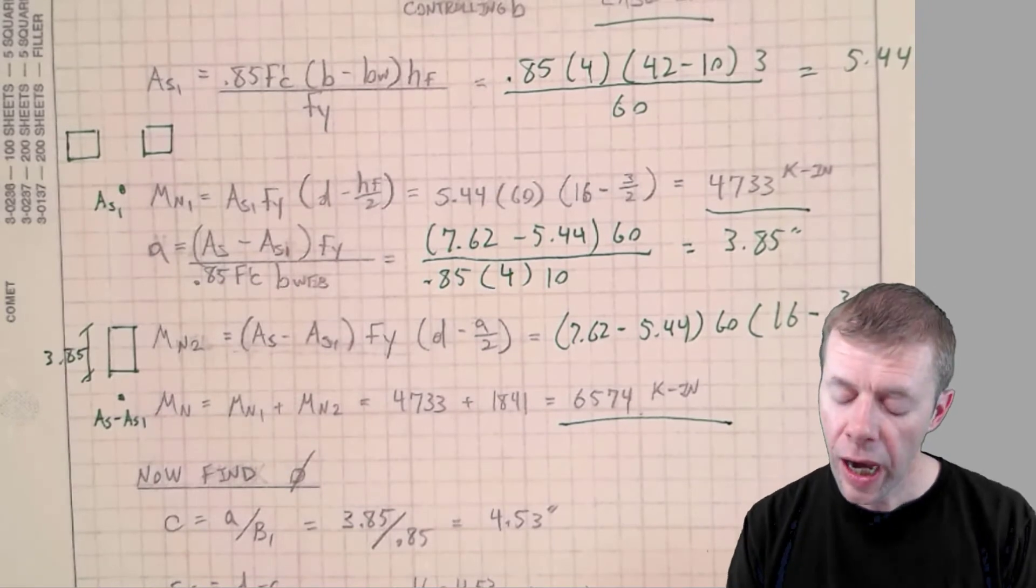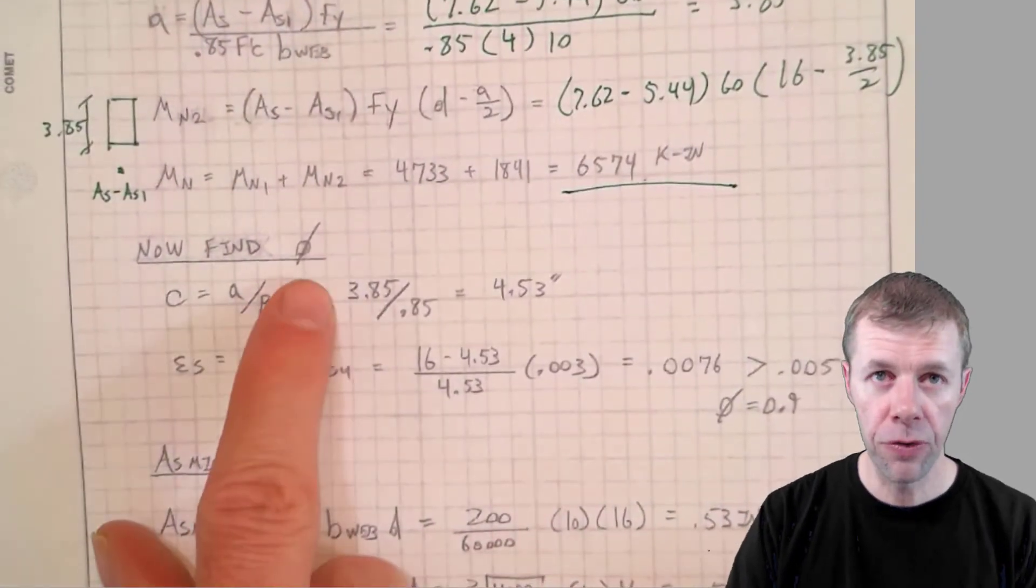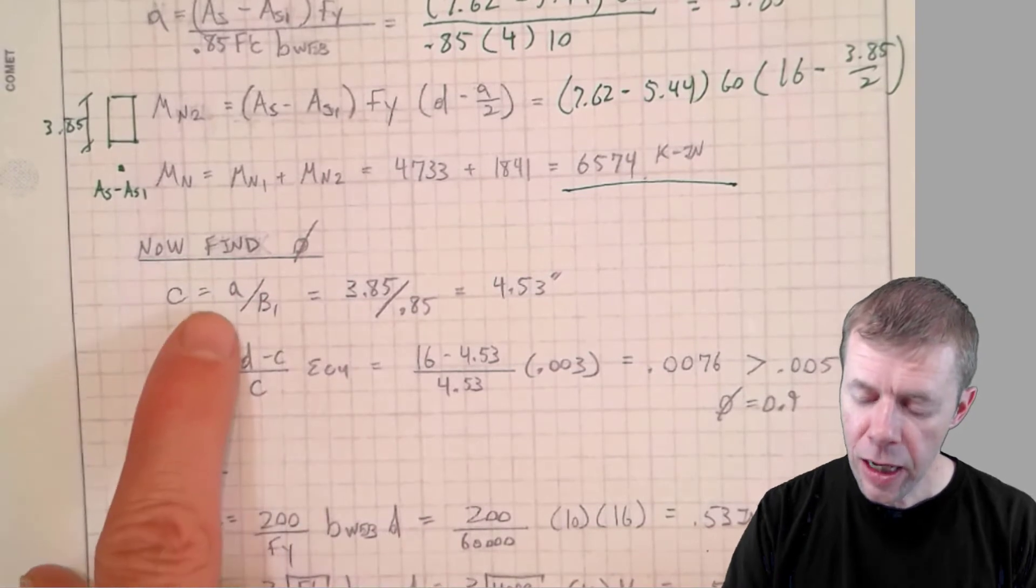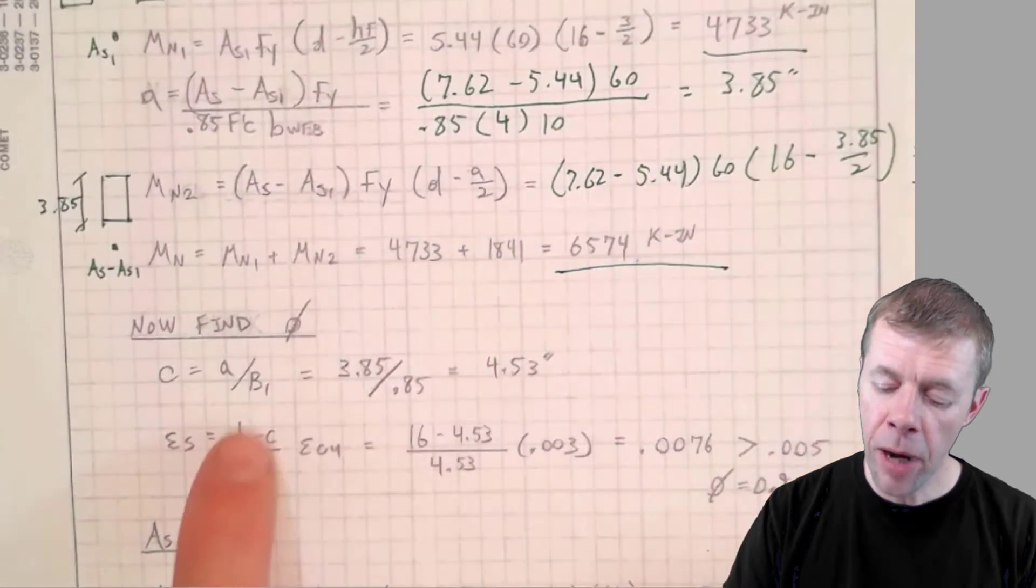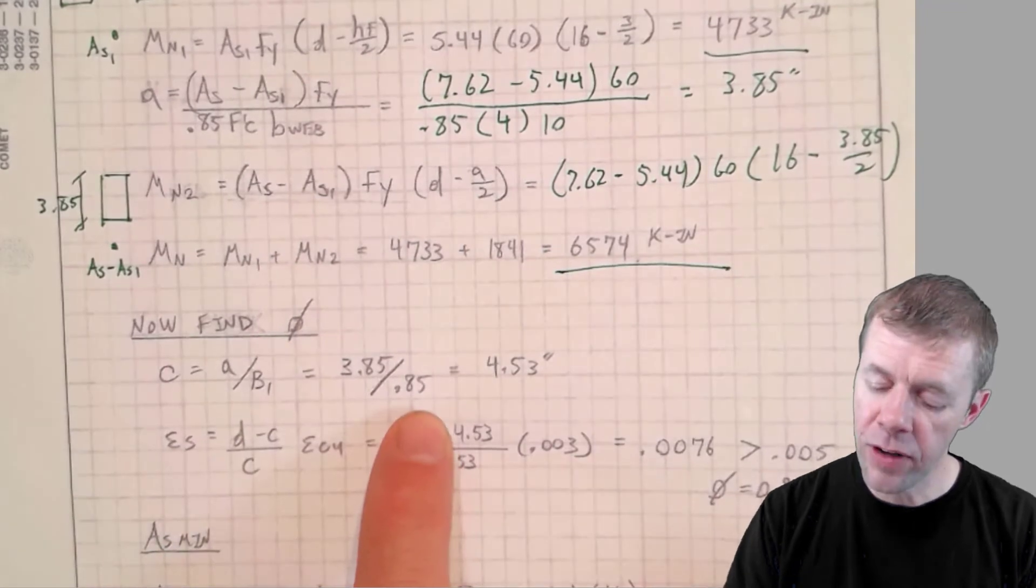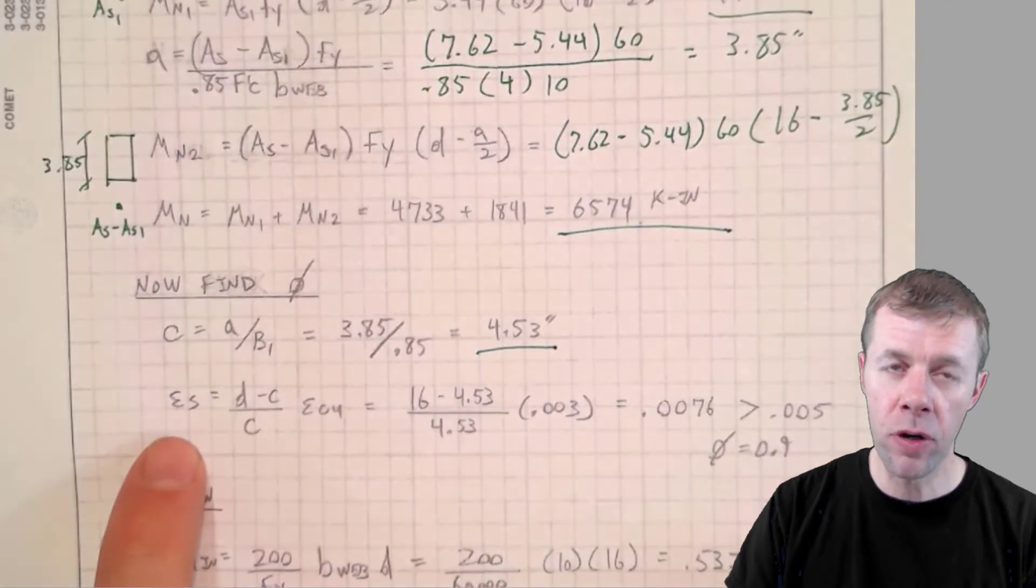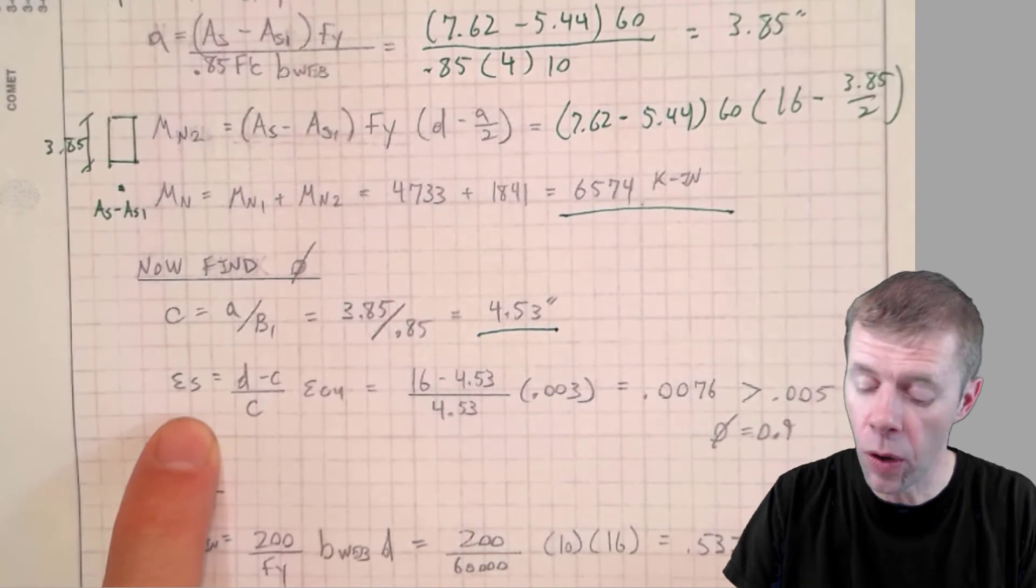Now I need to check a couple things. I got to find what my phi factor is. So I have to take my A, which is 3.85. I already calculated that. Divide by my beta 1, which is 0.85 and I get 4.53.